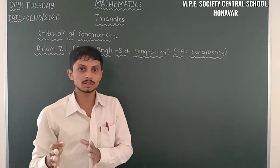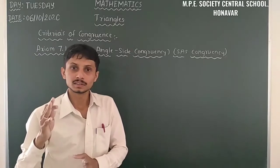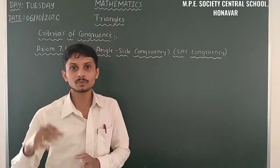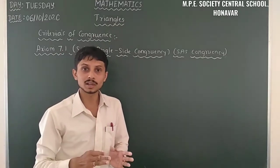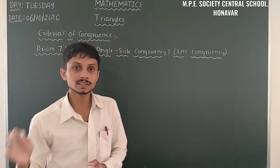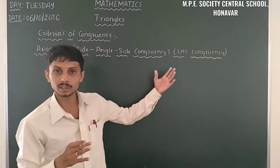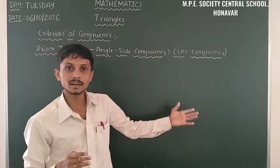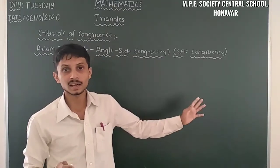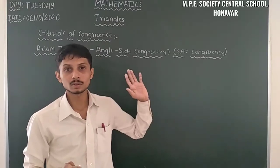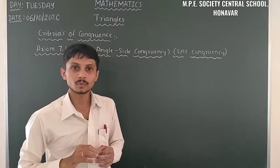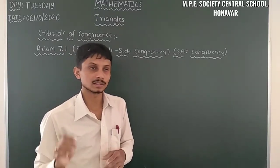If two triangles are congruent, two sides and the included angle of one triangle are equal to the two sides and included angle of another triangle. That means two pairs of corresponding sides are equal and their included angles are also equal — then only we consider those two triangles as congruent.